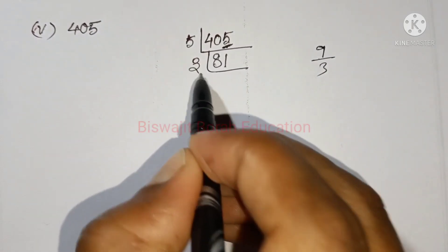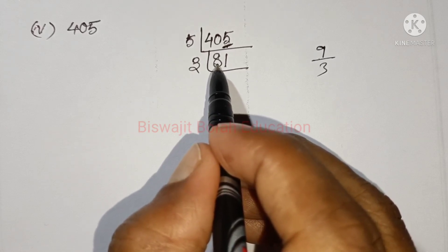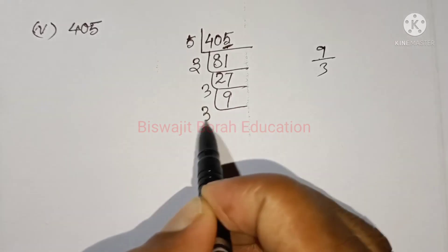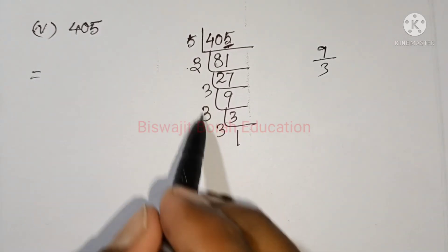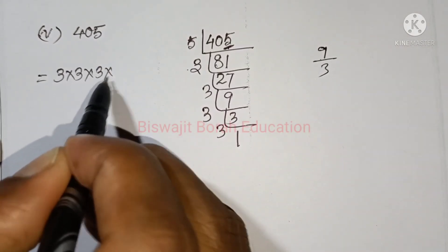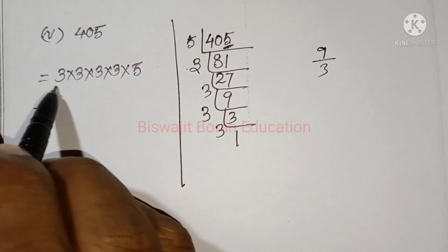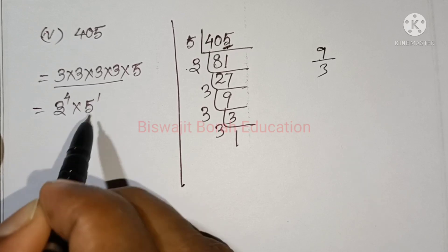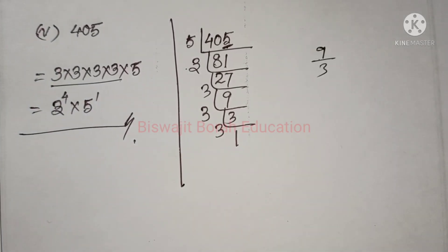So, 3 into 3 into 3 into 5 into 5. So, 3 into 3 into 5. So, 3 to the power of 4 into 5 to the power of 1, 5 will be 0. So, 8 is 10. So, 4 into 5.